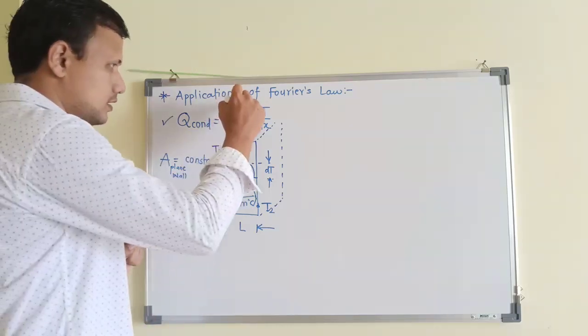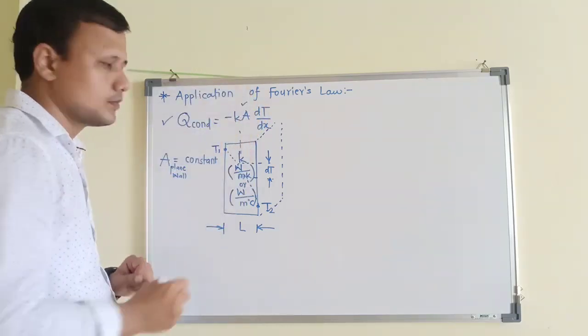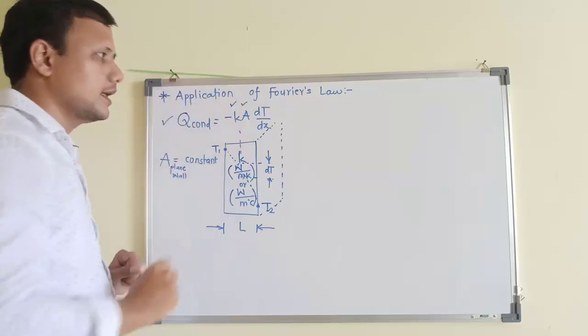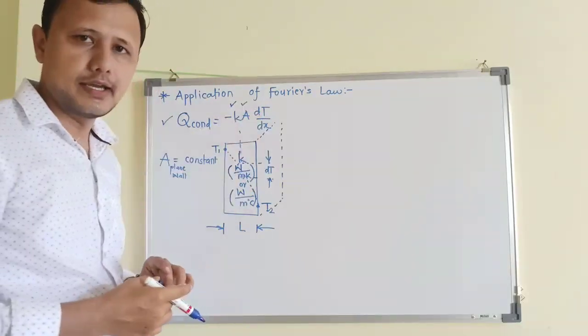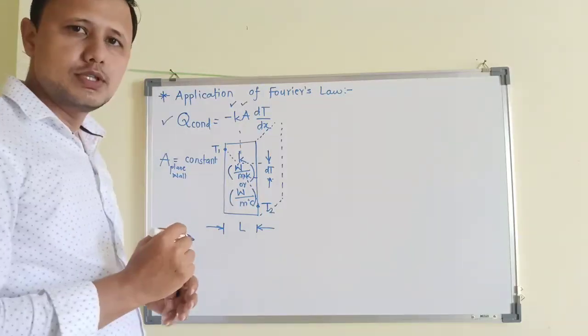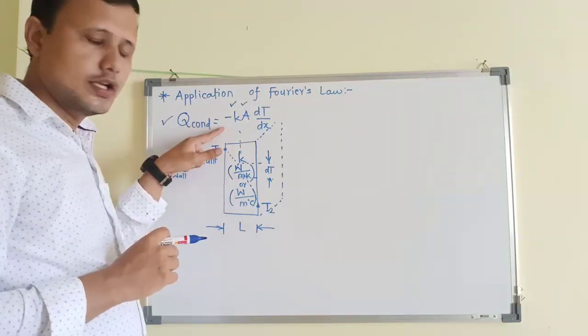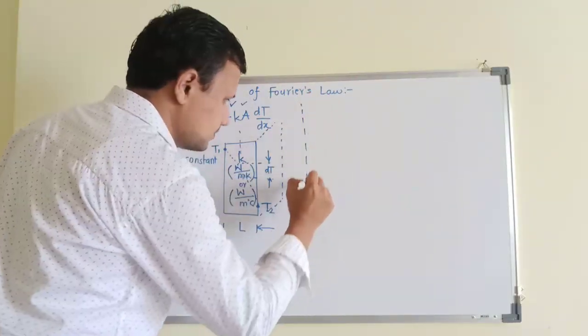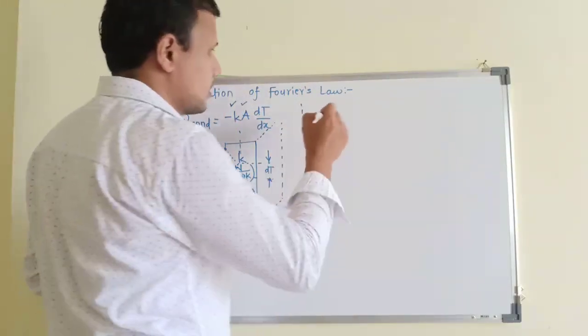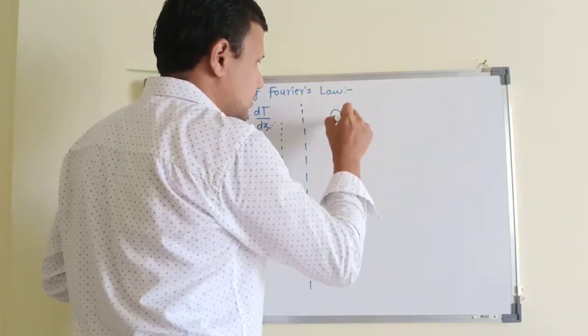So in this equation this will be a constant parameter. Thermal conductivity of the material will be a constant parameter. So only variable quantity will be dT by dx. So now we can proceed towards converting this differential equation into some analytical form. So for that purpose we will need to integrate that equation.